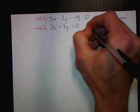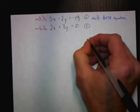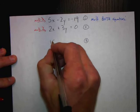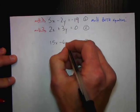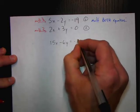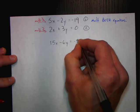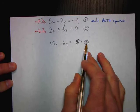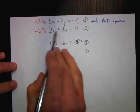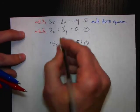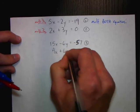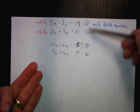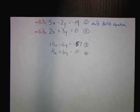I'm going to call the first equation equation 1 and the second equation equation 2. I'm going to create equation 3 by multiplying the top equation by 3: 3 times 5x gives 15x, 3 times negative 2y gives minus 6y, and 3 times negative 19 gives negative 57. Then I create equation 4 by multiplying the second equation by 2: 2 times 2x gives 4x, plus 6y equals 0. Equation 1 and equation 3 are identical graphs; equation 2 and equation 4 are identical graphs — but I have two new equations that will allow a cancellation.